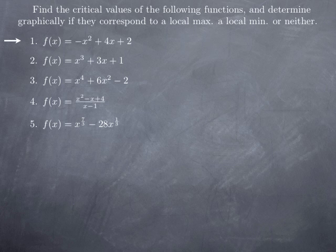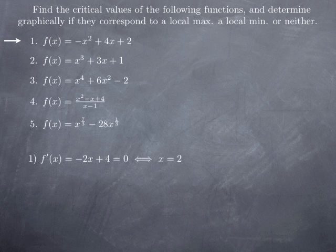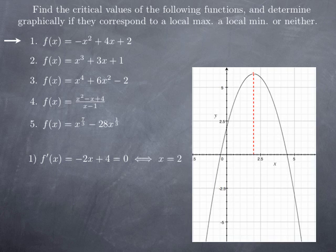Let's look at a few more examples. For f(x) = -x²+4x+2, the derivative is -2x+4, which is defined everywhere. So the only critical values are those making the derivative 0. Here f'(x) = 0 only when x = 2, so this is the only critical value. If we draw the graph, we see that we have a local maximum at x = 2.